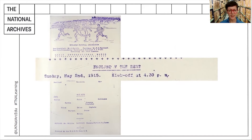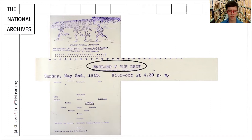The heading 'England versus the rest' must refer to the two teams competing. But was this an international game? If so, who were the rest?